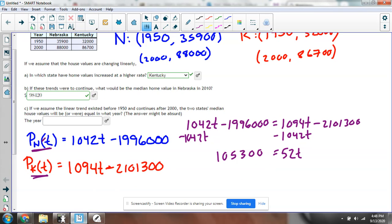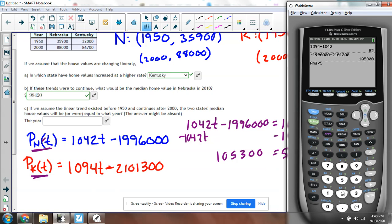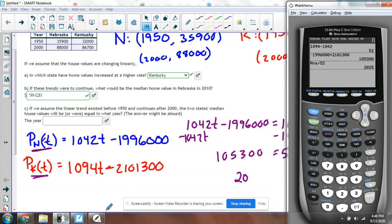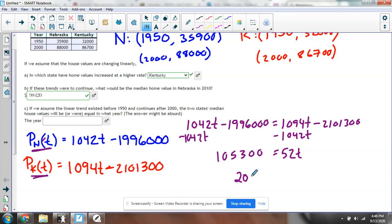Then divide both sides by 52 to get your answer. This is 2025 equals t.